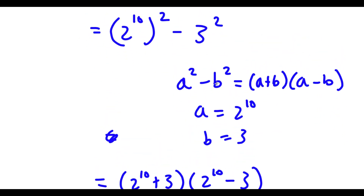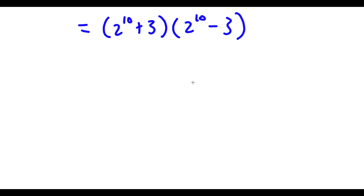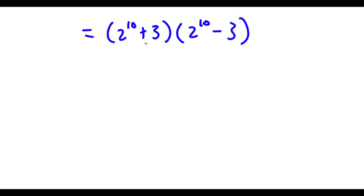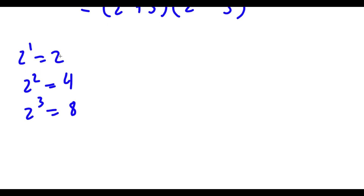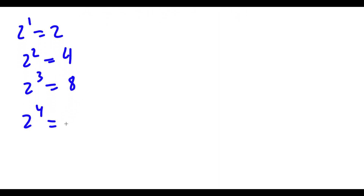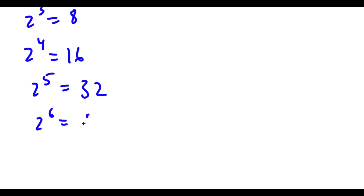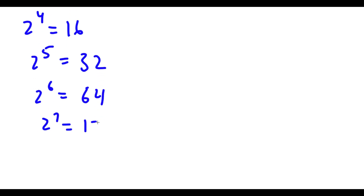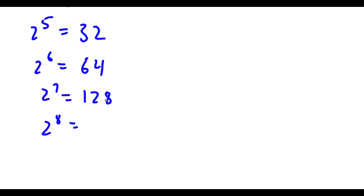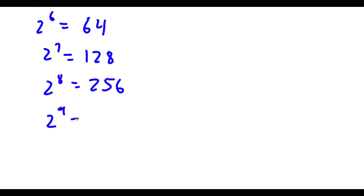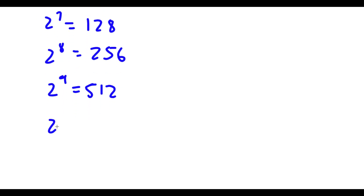Now let's simplify 2 to the power of 10. Well, 2^1 = 2, 2^2 = 4, 2^3 = 8 — notice how every time it doubles. So 2^4 = 16, 2^5 = 32, 2^6 = 64, 2^7 = 128, 2^8 = 256, 2^9 = 512, and finally 2 to the power of 10 is double 512, which is 1024.